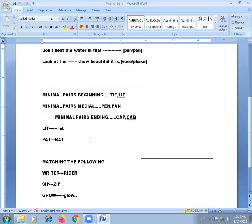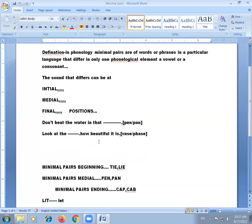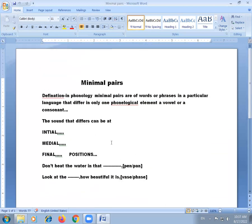We have a lot of examples in minimal pairs. For example: bin, bin, glamour, grammar, fridge, fridge, Jew, Jew, then, then, then, so, so, shoe, shoe, these, these, these. These are the examples for minimal pairs.